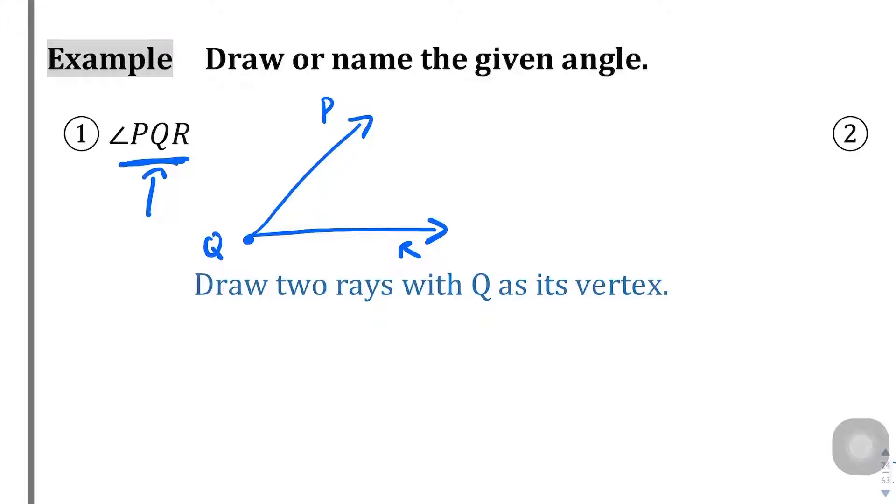So there's a way you can draw P, Q, R. You could also have put P over here and R over here. That was your other option.